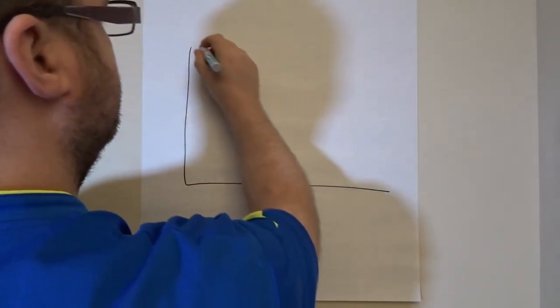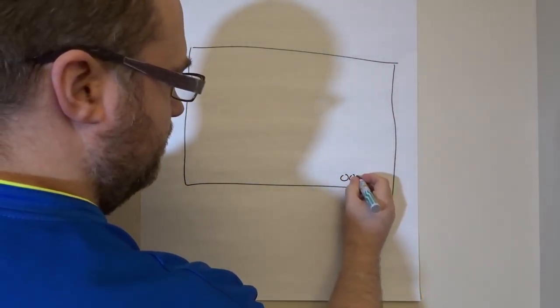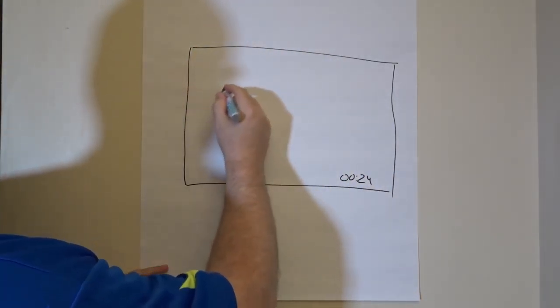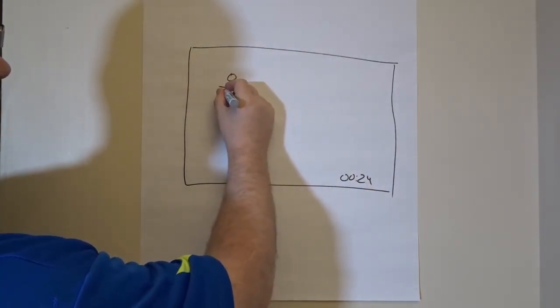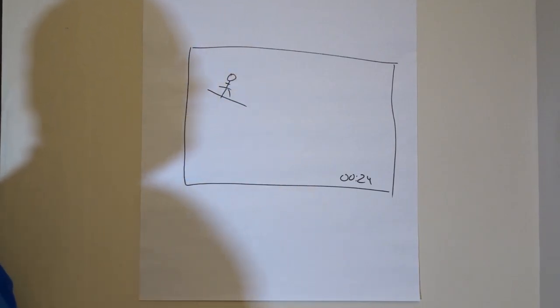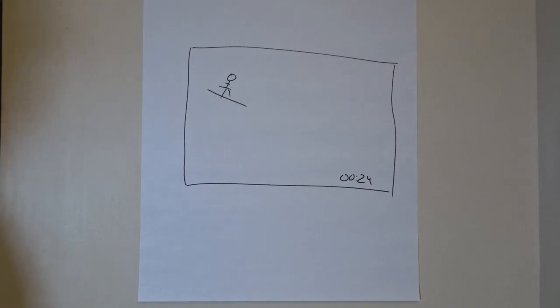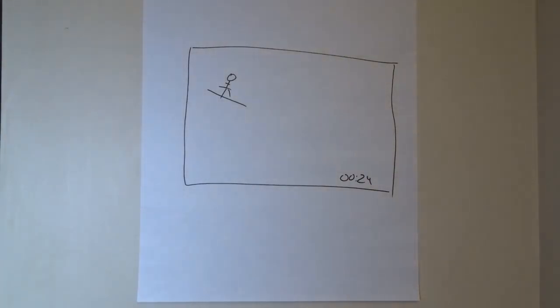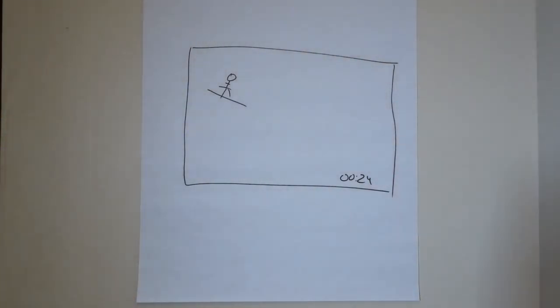If this is the screen, this is the time, and there's a skier. I know I'm crazy good at drawing, crazy good. Okay, and there's a skier.